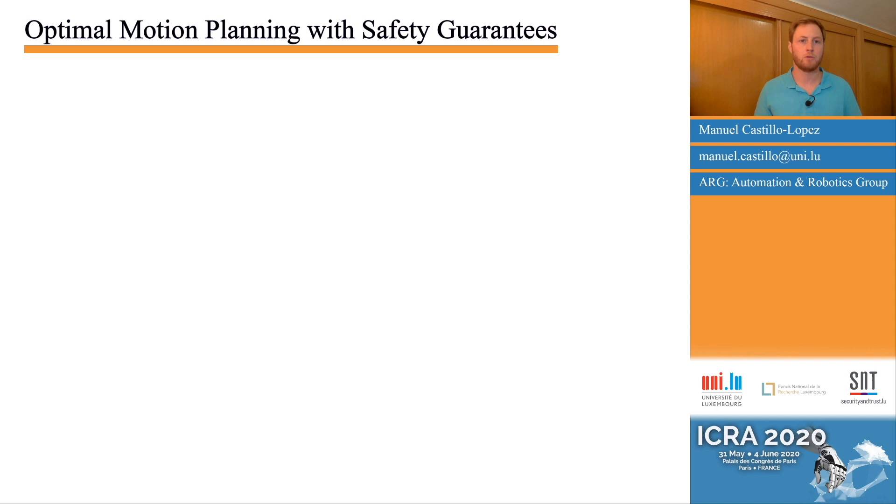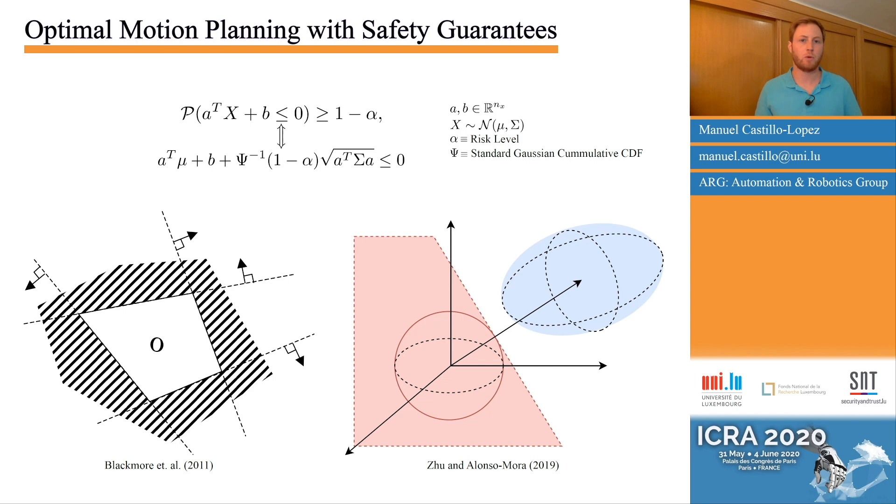During the last decade, a major effort has been made to provide optimal motion planning with safety guarantees. For the sake of computational efficiency, most approaches exploit the fact that linear Gaussian chance constraints have a closed-form solution. The main limitation is that we are restricted to use linear chance constraints to ensure safety.